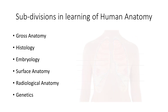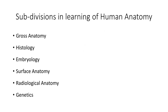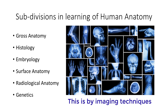Topographic anatomy is surface anatomy, where parts of the body are projected onto the surface. With knowledge of topographic anatomy, you will be able to outline the different organs of the human body on the surface. Radiological anatomy is the study of deeper organs in living persons.